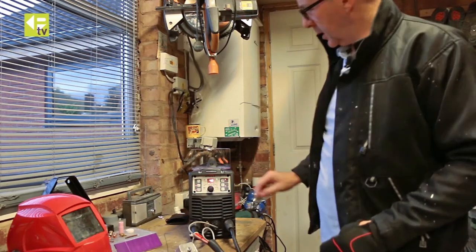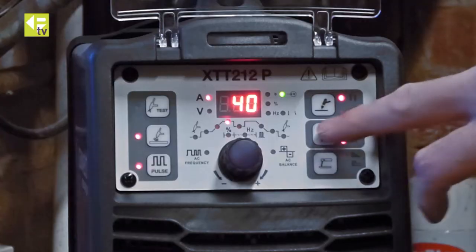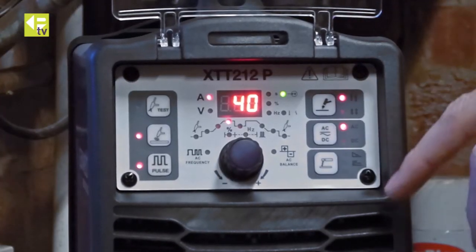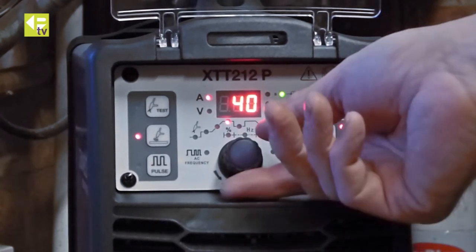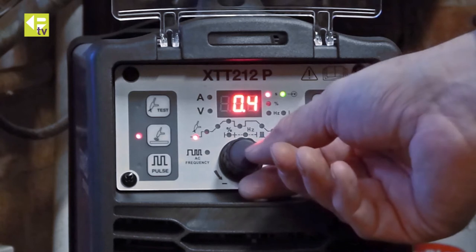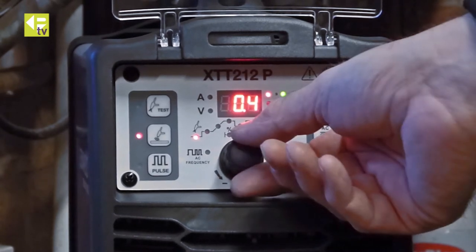The second job is the aluminum, so we need to toggle the machine onto AC. We won't use the pulse this time. Running through the features: pre-flow...